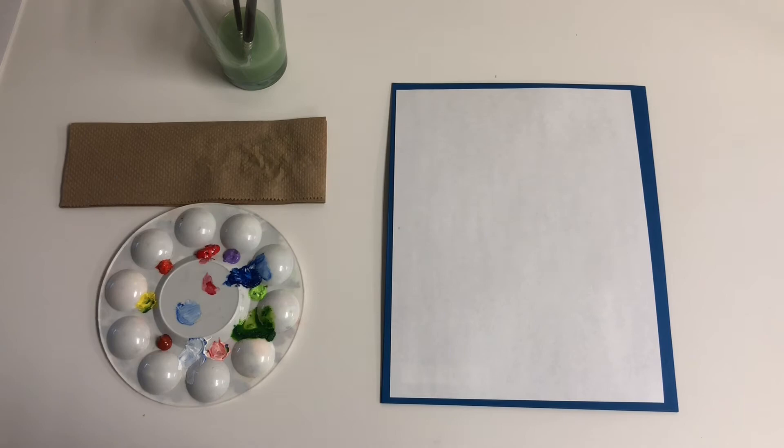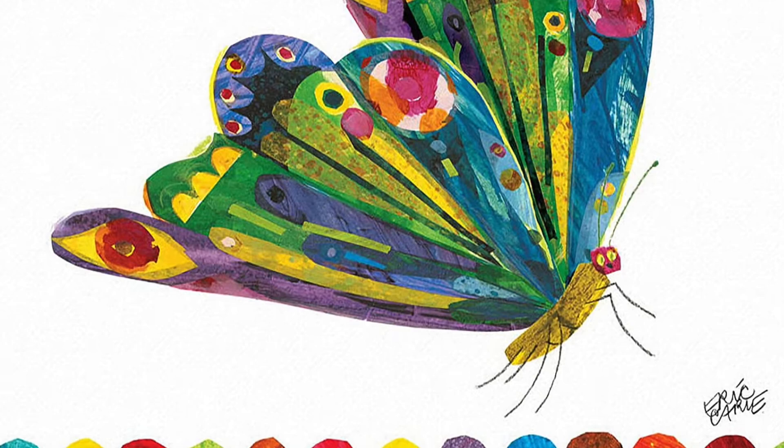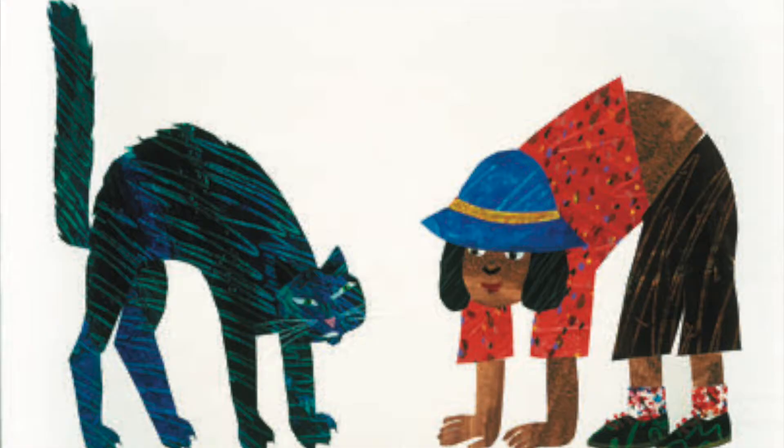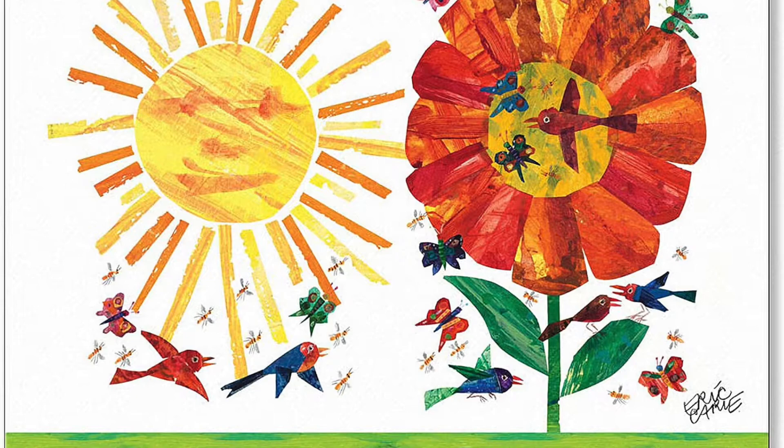So Eric Carle was born in 1929. He was an American designer, illustrator, and writer of children's books, many of which you may recognize. He is most noted for The Very Hungry Caterpillar, a picture book that has been translated into more than 66 languages and sold more than 50 million copies.